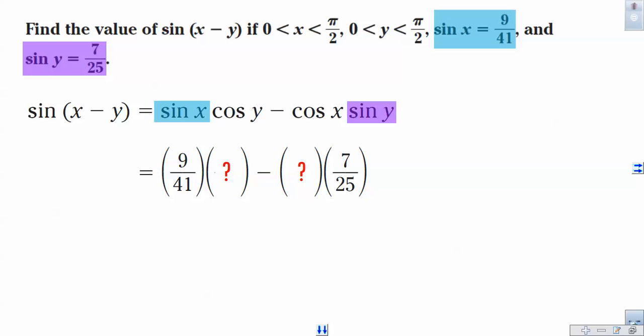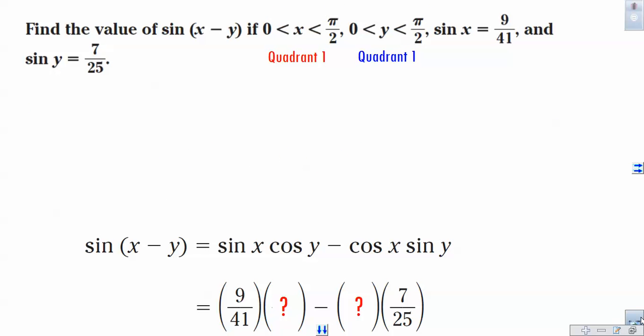So what should we do? Well, this is where the range of values for x and y come into play. If we look right up here and examine that x is between 0 and pi over 2, same with y between 0 and pi over 2, that leads us to the conclusion that both x and y are first quadrant angles. And if all students take calculus, that means that we're dealing with nothing but positive values for cosine.